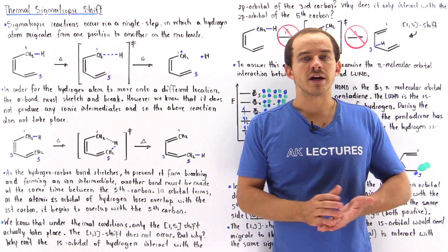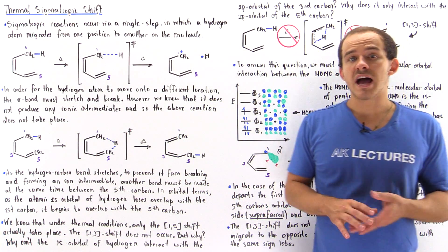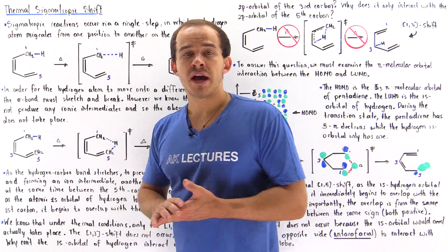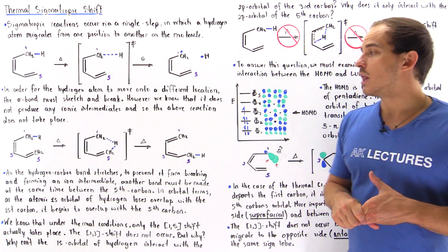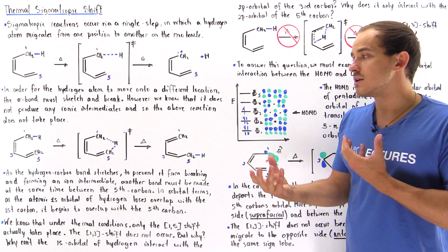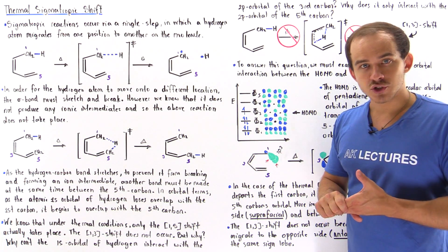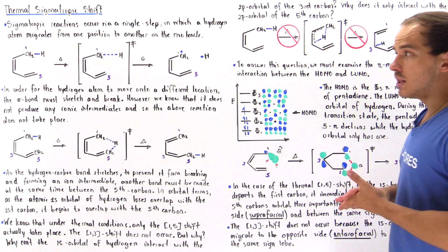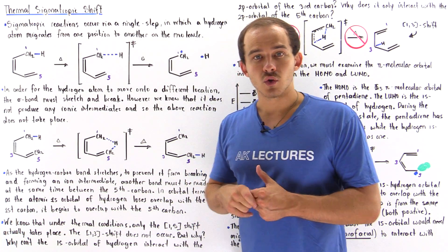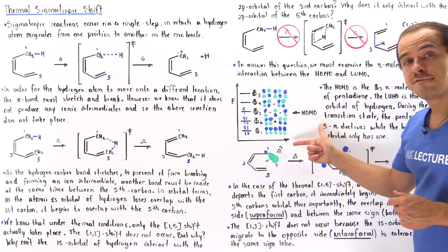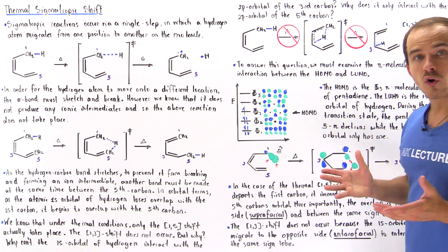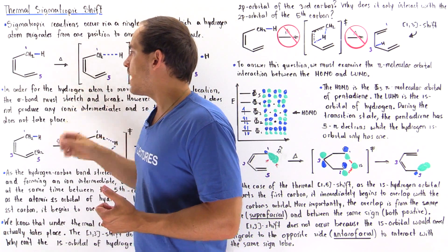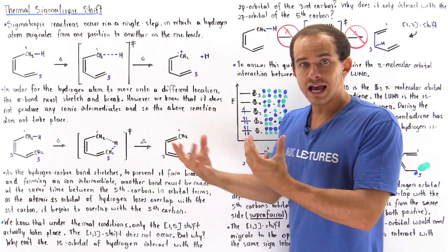To answer this question, we have to discuss the overlap between the highest occupied molecular orbital (HOMO) and the lowest unoccupied molecular orbital (LUMO) of 1,3-pentadiene — the orbital interaction. What exactly are the different types of pi molecular orbitals of our pentadiene molecule? We have five different molecular orbitals because we have five 2p orbitals from the five carbons, each donating a 2p orbital, giving us five different pi molecular orbitals.